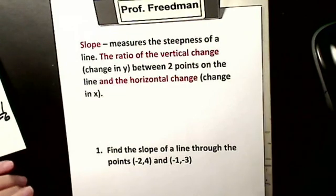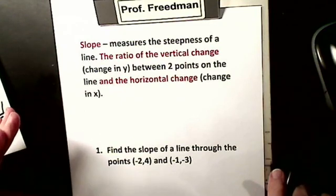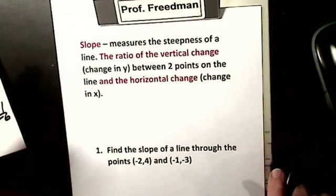I want to talk about the slope of a line. The slope measures the steepness of a line. By definition, it's the ratio of the vertical change, which is the change in y, between two points on the line, and the horizontal change, which is the change in x.